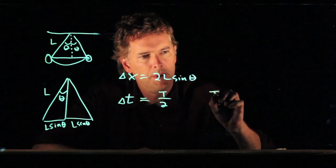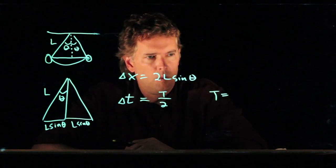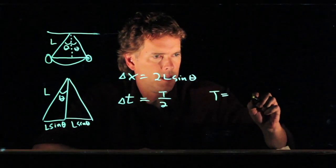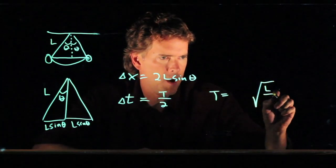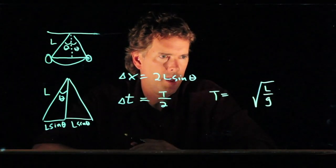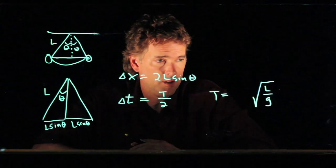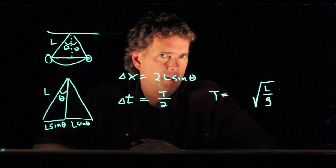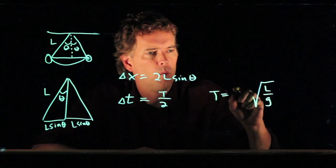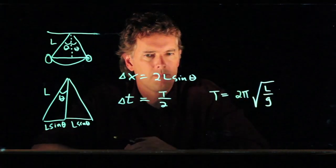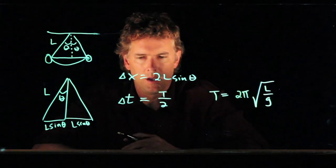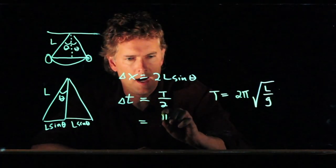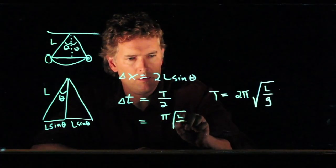So what is the period of a pendulum? Well, we know that it has to go like the length of the pendulum and gravity, and we probably remember that it's got to have a square root in it, and there's a 2 pi floating around somewhere — and the 2 pi is in fact right here. So delta T equals T over 2, which is pi times the square root of L over G.